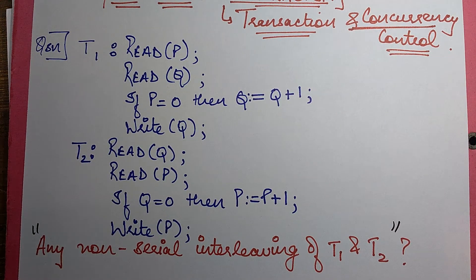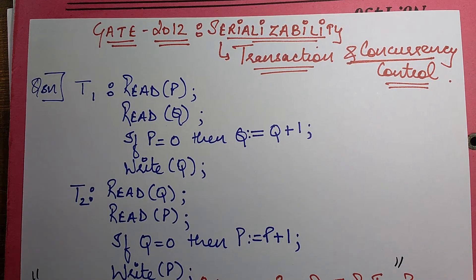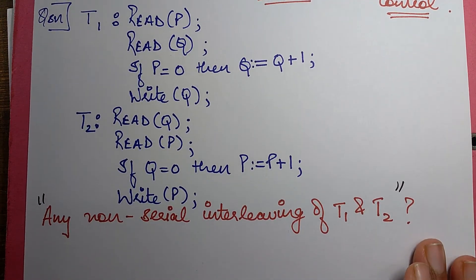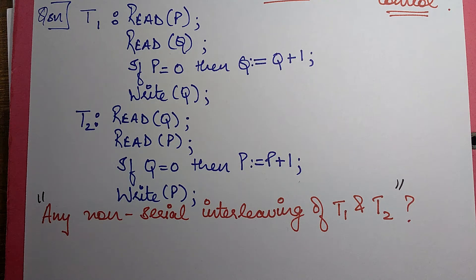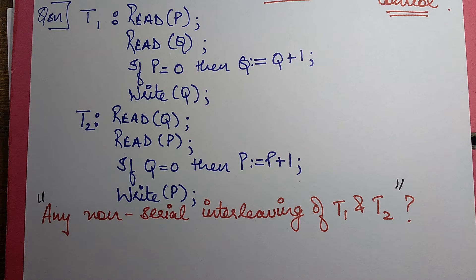Any non-serial interleaving of T1 and T2. That means the answer they are asking for is in respect to all generalized interleaved fashions of T1 and T2. What I mean to say is that even if I prove this wrong for any one of the interleaved fashions of T1 and T2, I'm done with this question. This was the main point you had to capture.